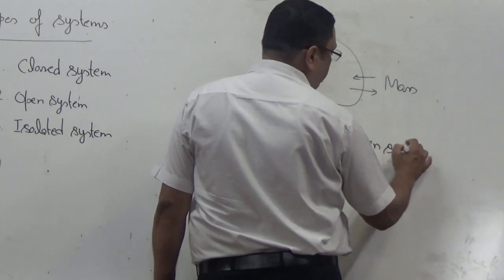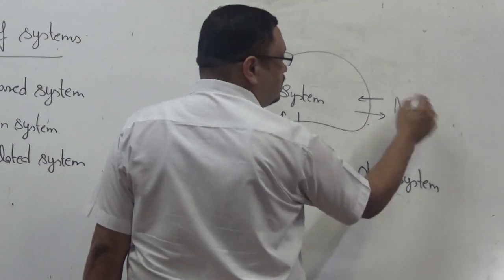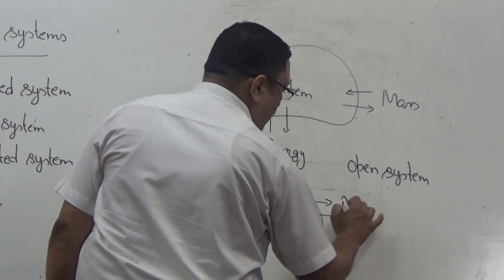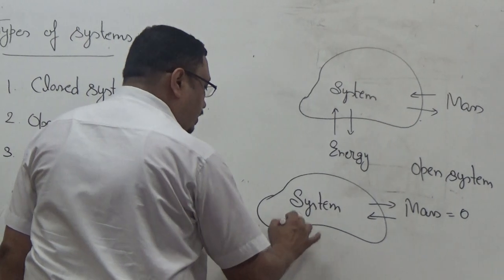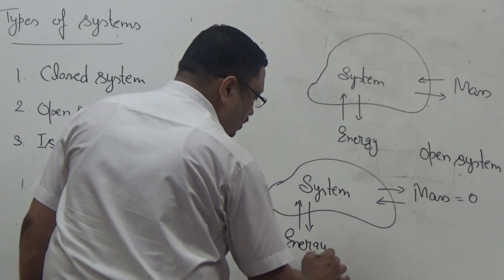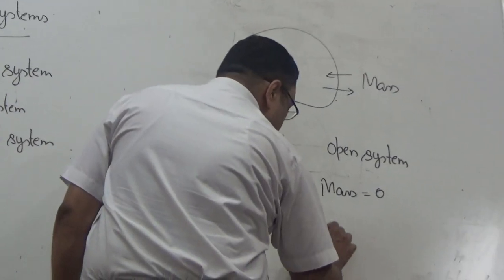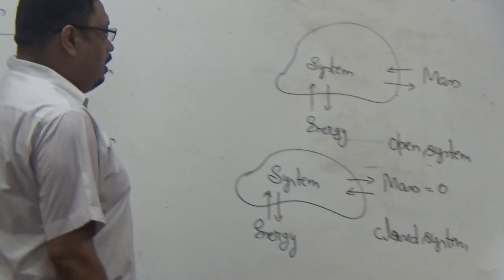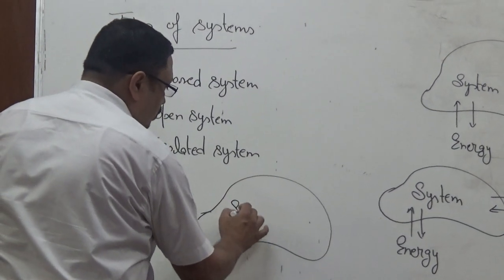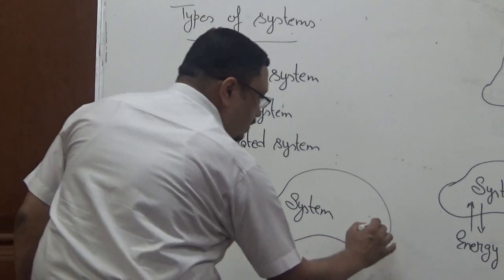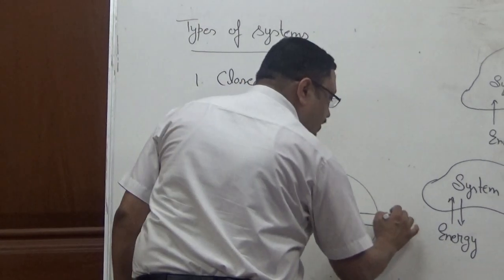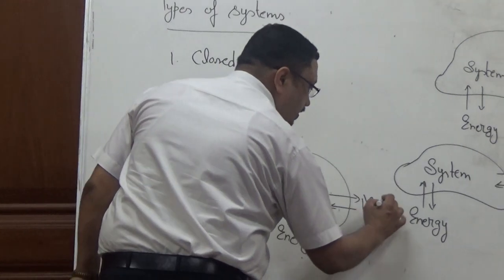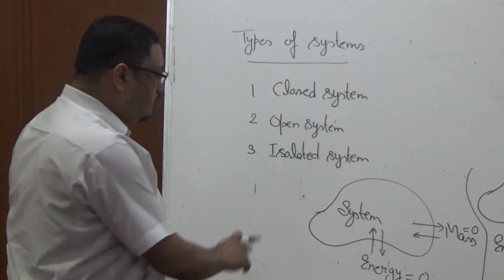In a closed system, mass transfer is zero but energy transfer is possible. If a system cannot interact with the surroundings — meaning both mass transfer and energy transfer are zero — then that particular system is called an isolated system.